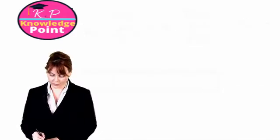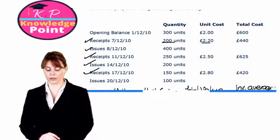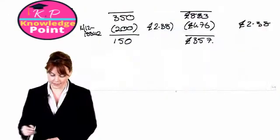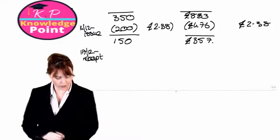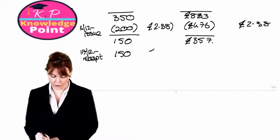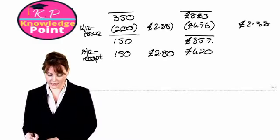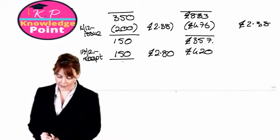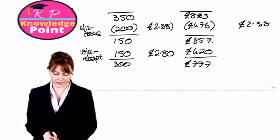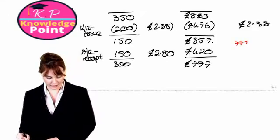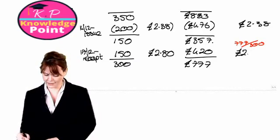Next we have another receipt — on the 17th of December — for 150 units costing 2 pounds 80 each. Whenever we have a receipt, we need to calculate a new average. The total value of this receipt is 420 pounds. We now have 300 units in inventory with a total value of 777 pounds, so our new average cost per unit is 777 divided by 300, which gives us 2 pounds 59 pence.